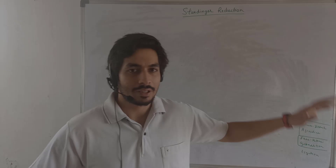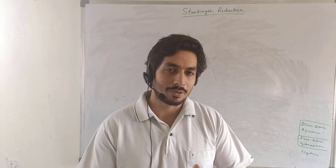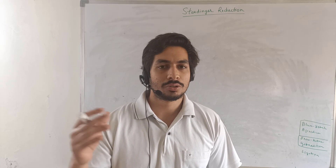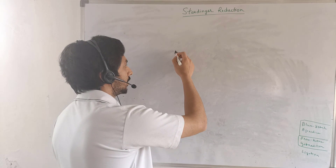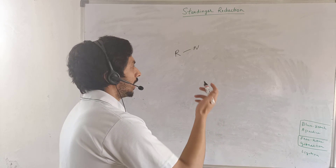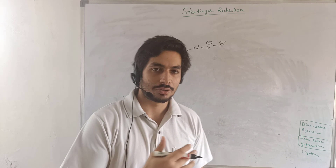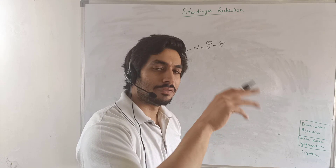Staudinger reduction is a pretty straightforward and popular reaction wherein an azide is basically reduced into an amine. Now, the azide can be drawn in different forms — I personally like to draw it in a particular format for showing the mechanism. In the previous reaction we talked about Mitsunobu, where triphenylphosphine also had a very important role. Over here as well, triphenylphosphine has a very important role — you add triphenylphosphine to the azide.